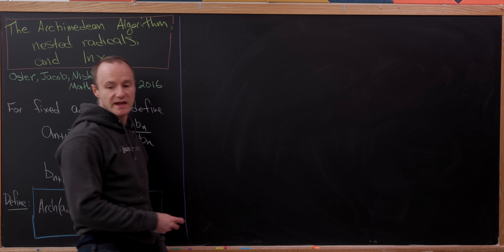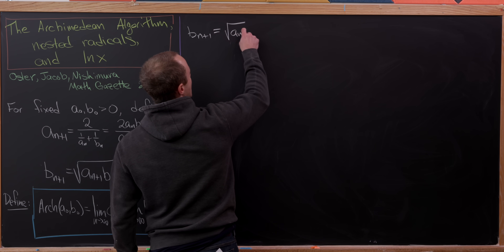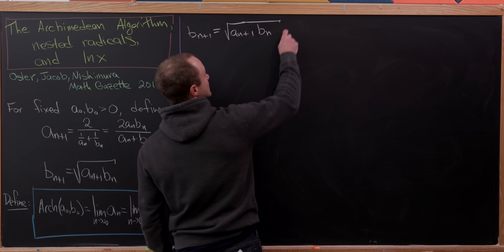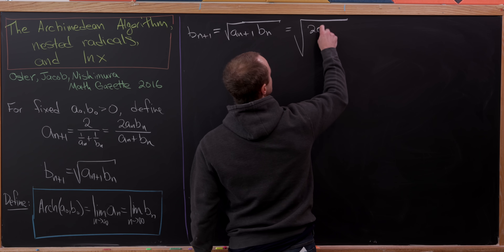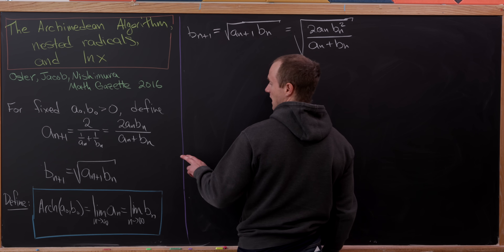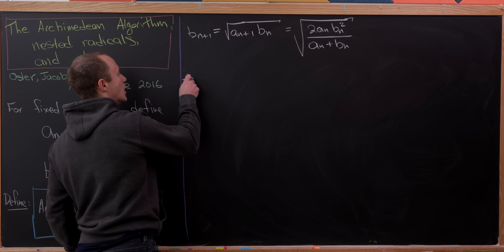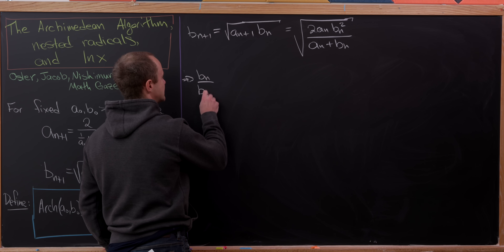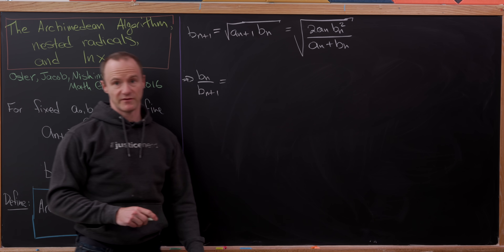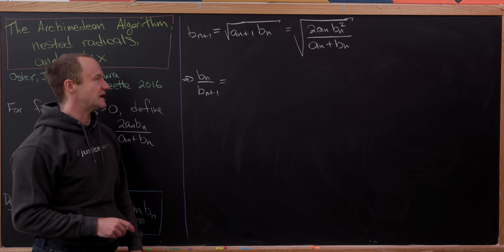The first thing we'd like to do is play around with the expression for b_{n+1}. Writing it in terms of its definition gives us the square root of a_{n+1} times b_n. That motivates us to substitute the definition of a_{n+1}, giving us the square root of 2·a_n·b_n² over (a_n + b_n), where there's a b_n squared because b_n is built into a_{n+1}. Now let's take the quotient b_n / b_{n+1} — the motivation is to bring the sum (a_n + b_n) up to the numerator where it's easier to work with.